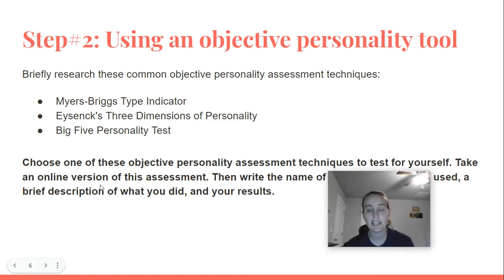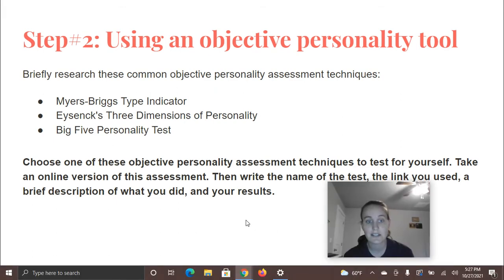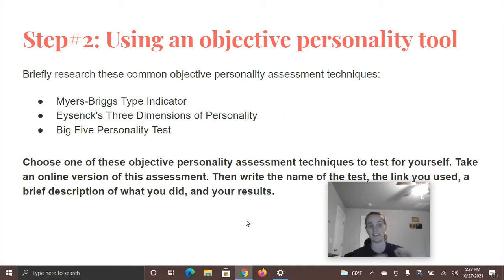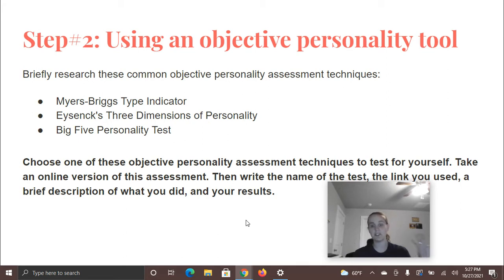Step number two: using an objective personality tool. Briefly research these common objective personality assessment techniques — the Myers-Briggs Type Indicator, the iSynx Three Dimensions of Personality, and the Big Five Personality Test. You're going to choose one of these objective personality assessment techniques to test for yourself. Take an online version of this assessment — just go to Google and search for the Big Five Personality Test, for example, and pick one of the links that pops up. Then write the name of the test, the link you used, a brief description of what you did, and your results.